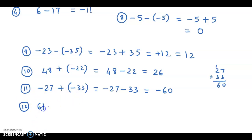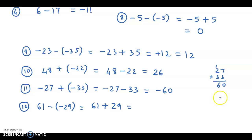Last example: 61 minus of minus 29. A negative followed by a negative becomes positive, so we have 61 plus 29. Adding: 1 and 9 is 10, carry 1, that becomes 9, giving a total of 90. So the answer is 90.